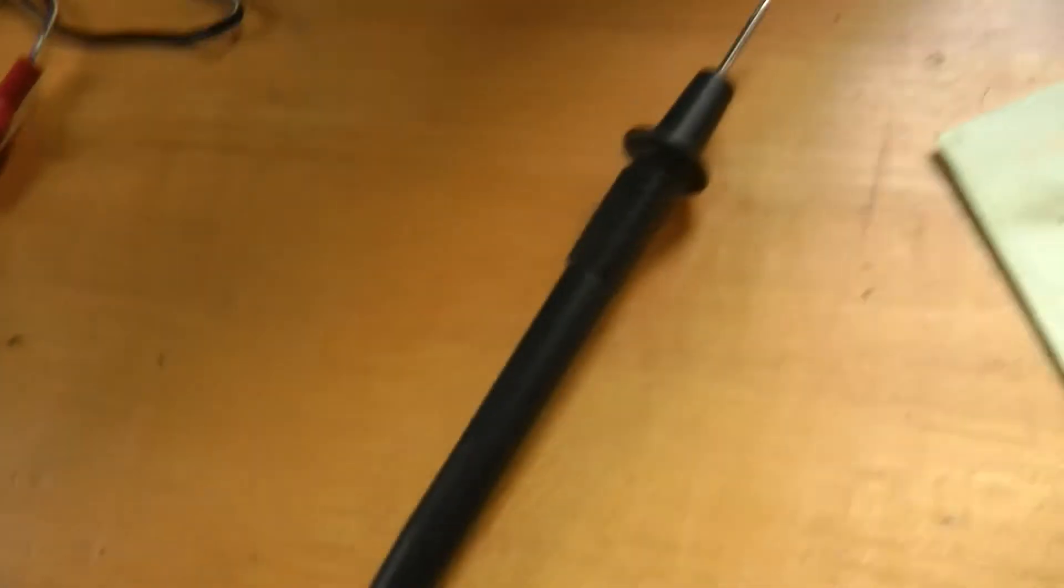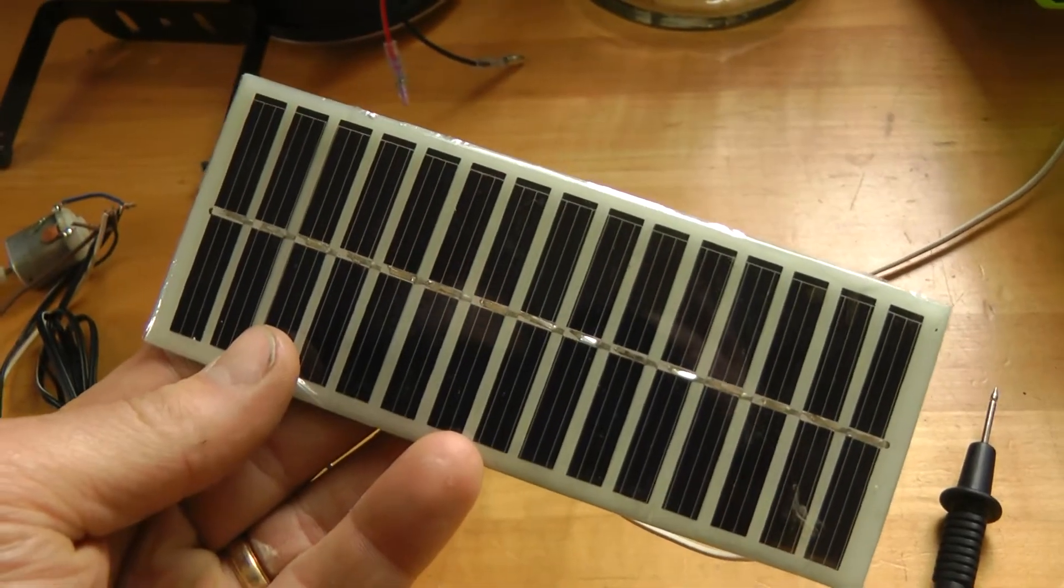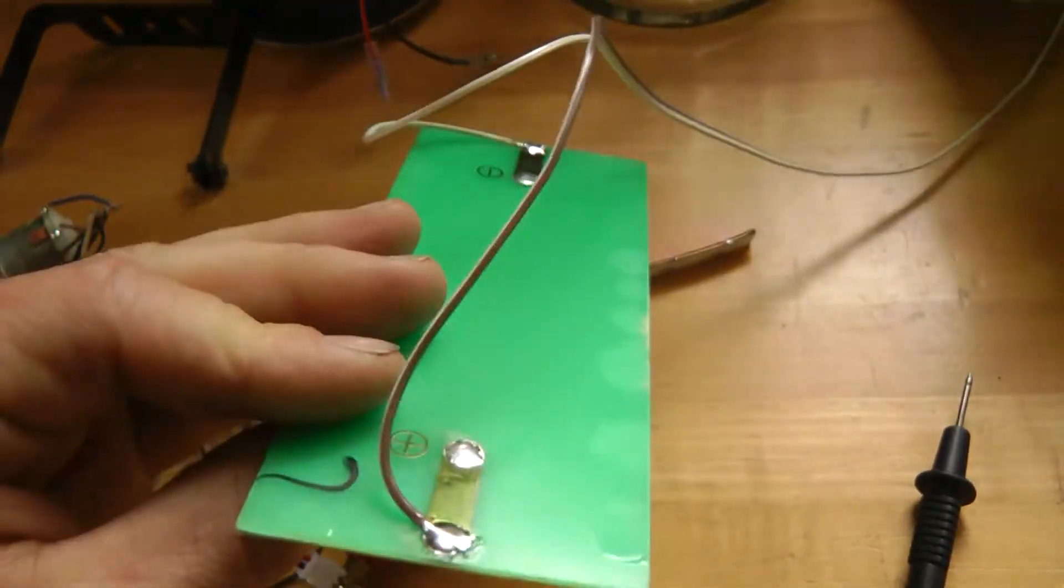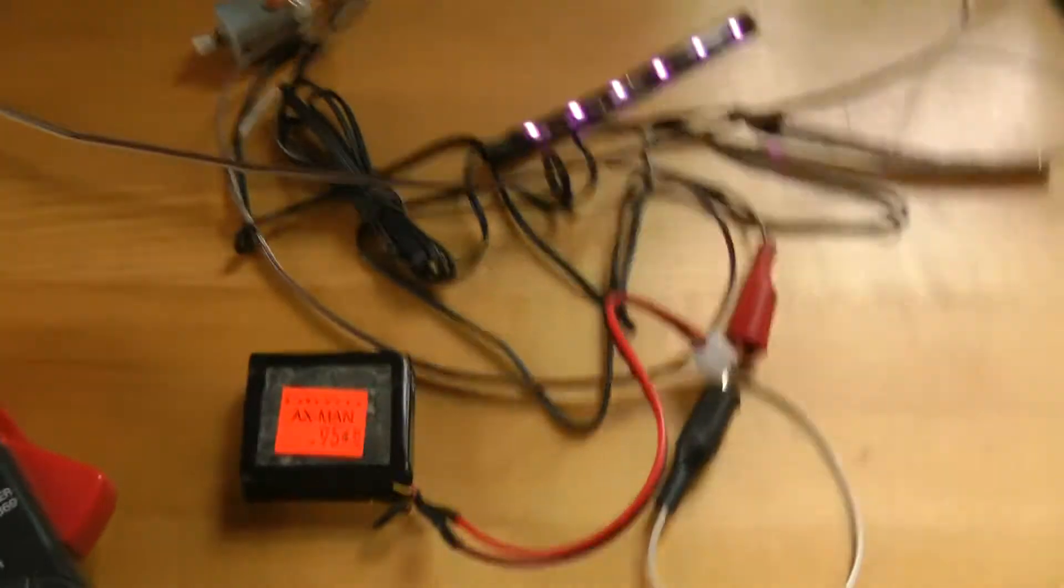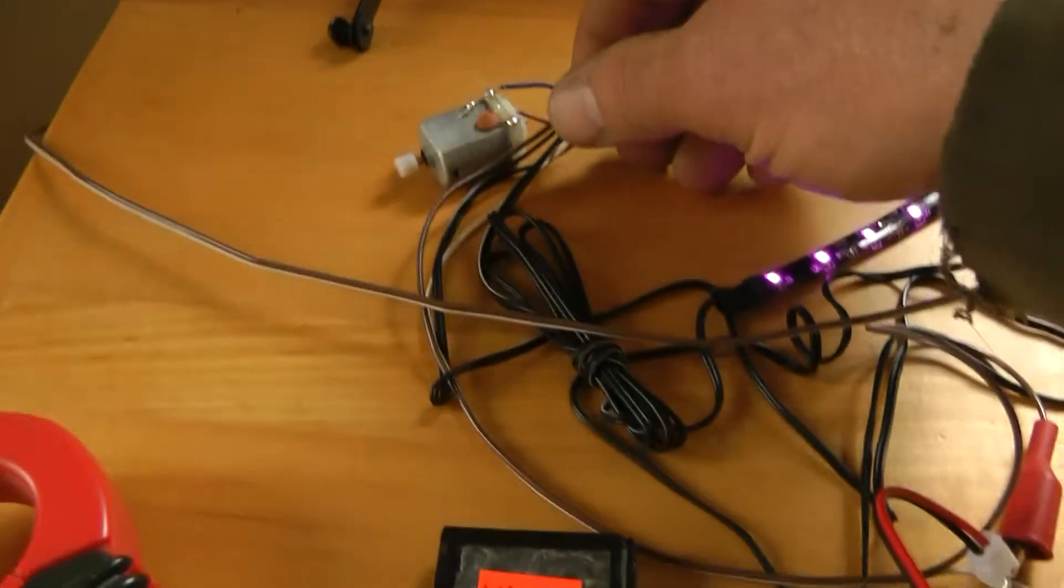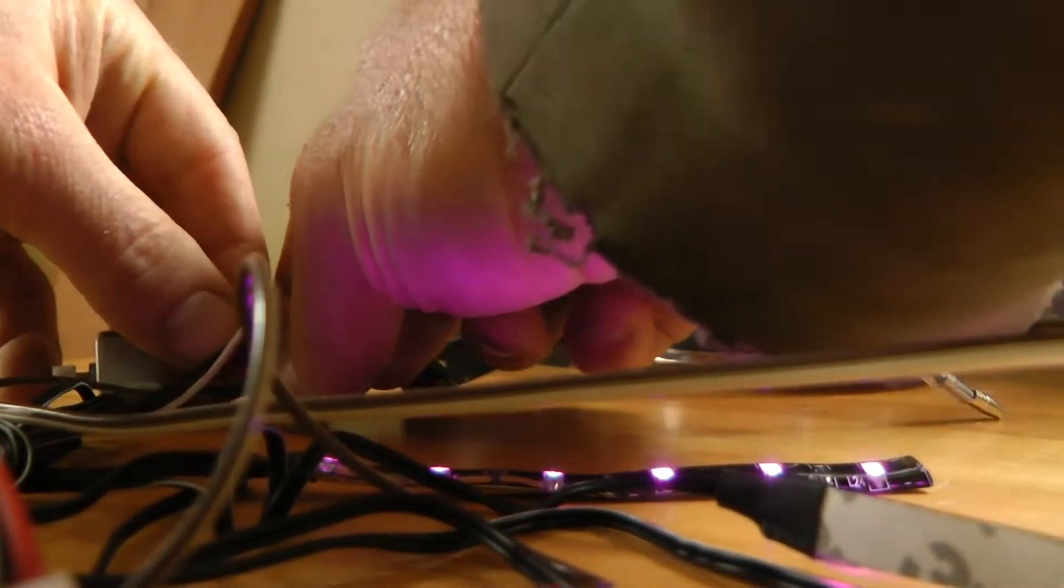And then I found this great little 7.5 volt solar panel for $10. And right now I'm trying to run down my battery so that I can see if the panel will charge it up.